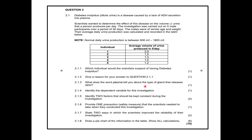Question 2.1.3: What does the word 'plasma' tell you about the type of gland that releases ADH? We know that plasma means blood plasma — that's where you've heard the word plasma before. ADH is secreted into the blood, so we know that the gland that secretes ADH is an endocrine gland — a gland that secretes hormones directly into the blood.